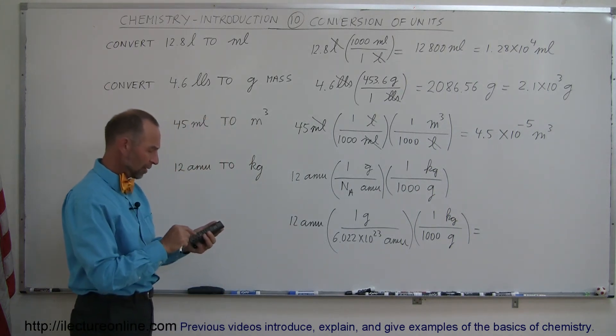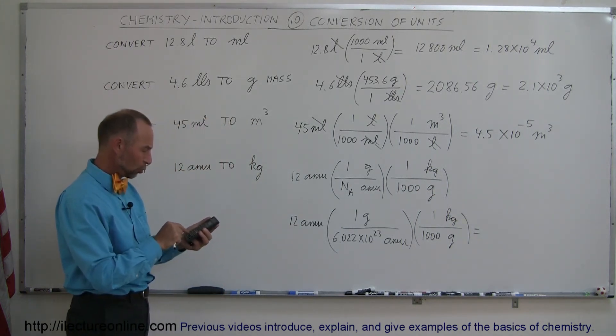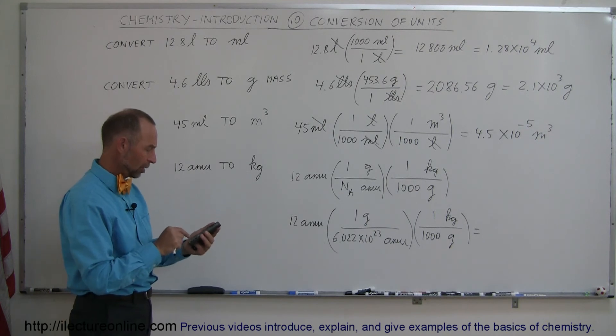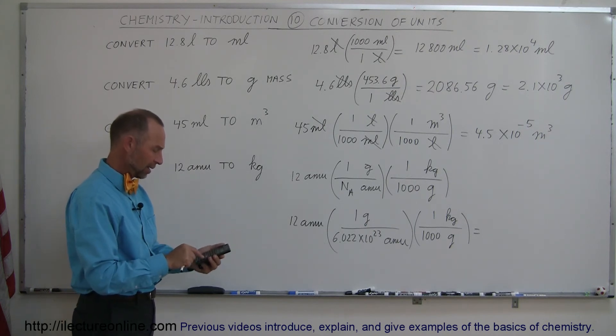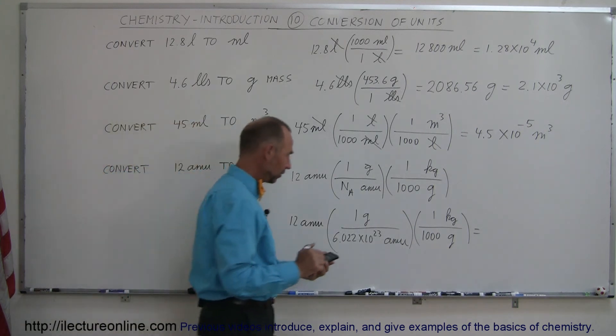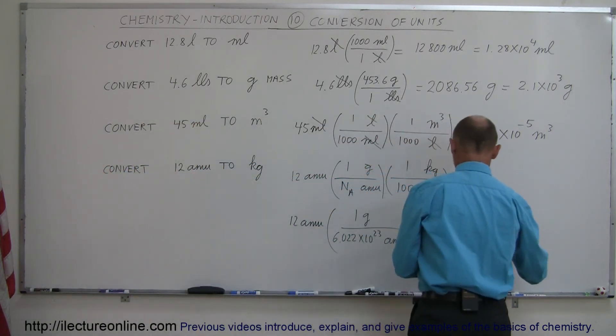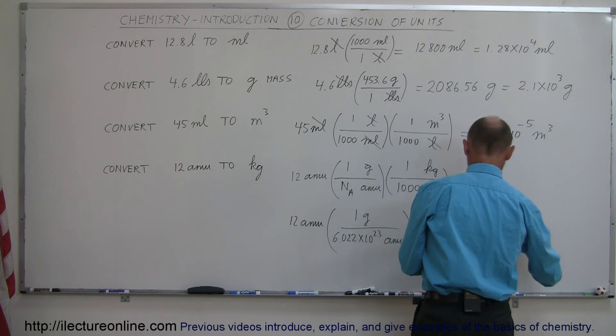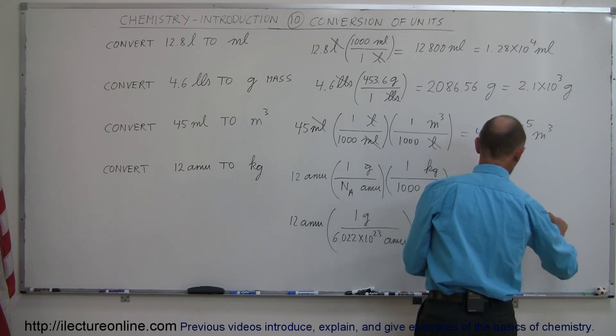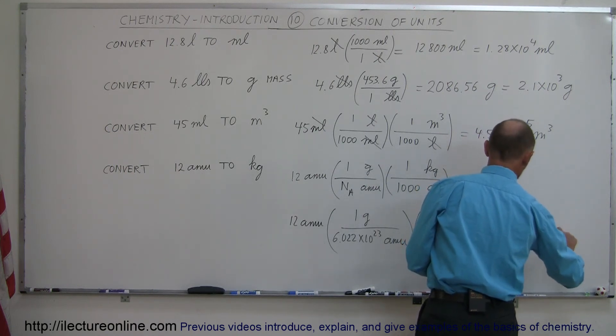We have 12 divided by 6.022e23, then divide by 1,000. This gives us 1.99 times 10 to the minus 26. And that would be kilograms.